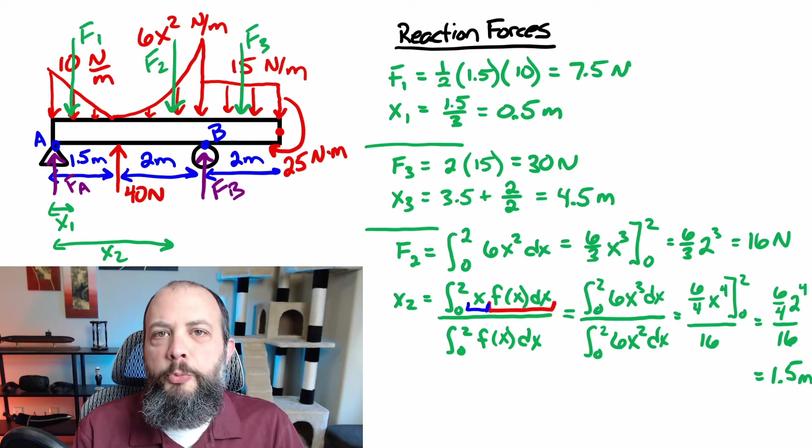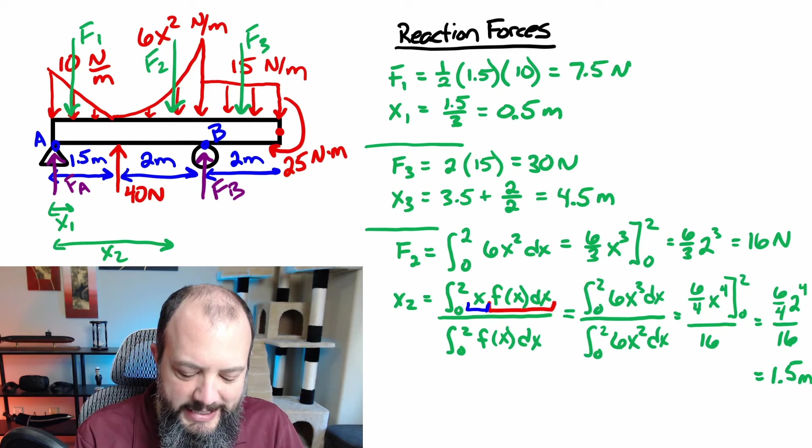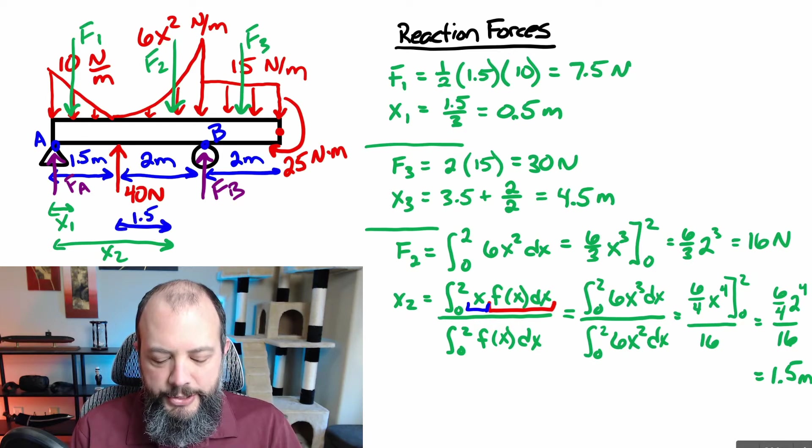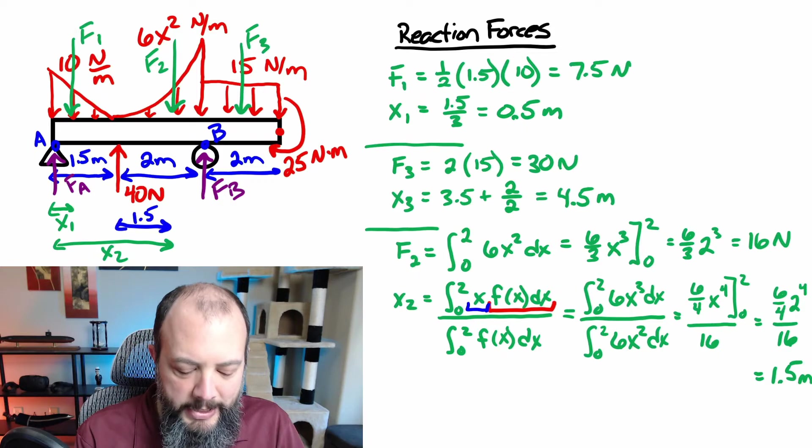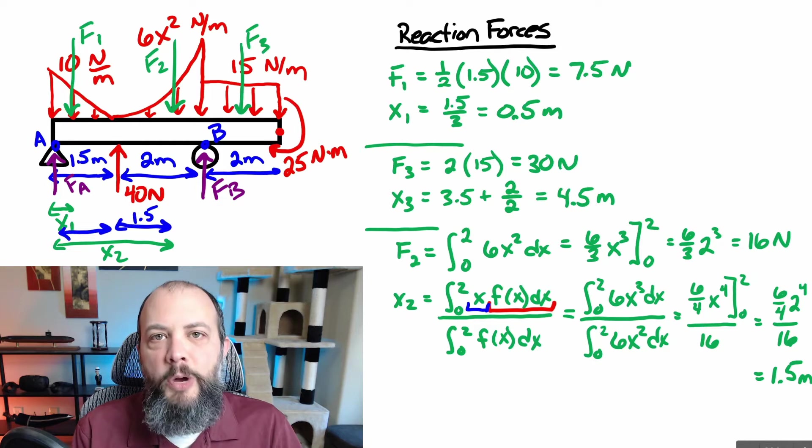So the results of my integral here are 1.5, but I actually need to be a little bit careful, because looking back at my picture, the distance that I just calculated is actually only this distance, 1.5, which is not actually x2. In order to get x2, I need to additionally add this first 1.5 that represents that beginning part of the beam as well. So my total x2 is going to be 3.